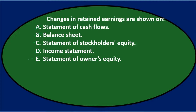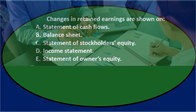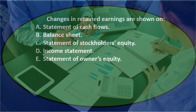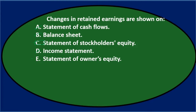Going through this again: changes in retained earnings are shown on either C statement of stockholders' equity or E statement of owner's equity. Of those two, stockholders' equity sounds more correct because owner's equity is the term used for a sole proprietorship. This is a corporation, so we call them stockholders. Same type of concept — a statement showing the beginning, change, and ending value in equity — but the name changes based on the type of entity. Final answer: changes in retained earnings are shown on C, statement of stockholders' equity.